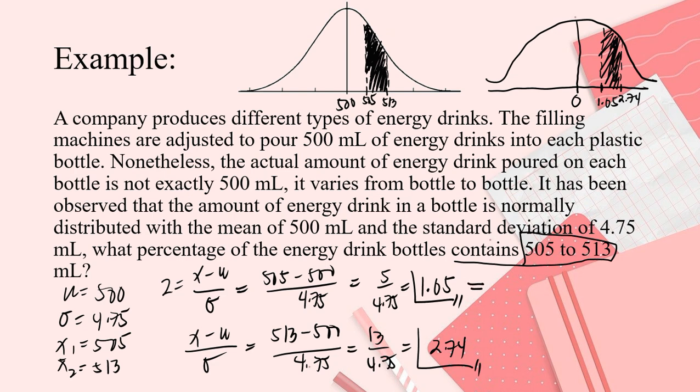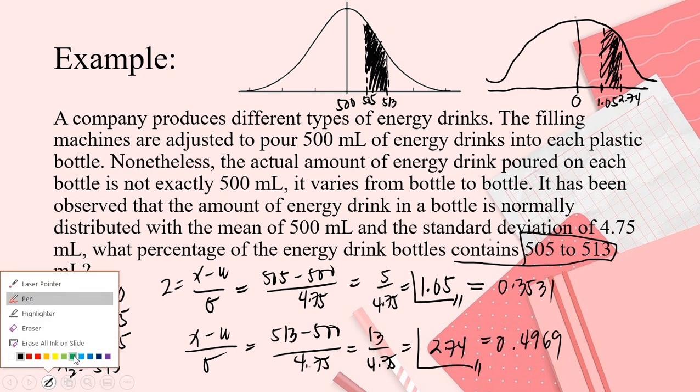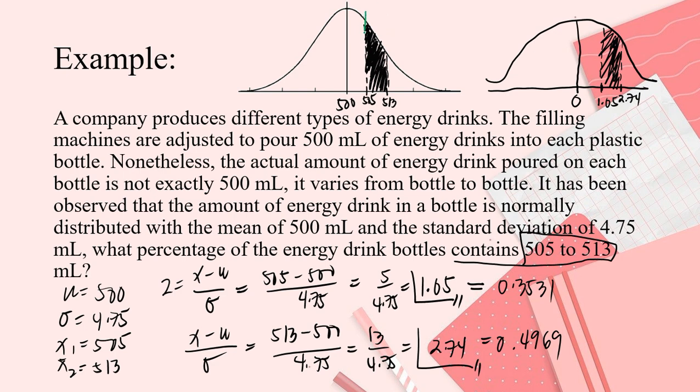What's being asked is contains these two. From 1.05 to 2.74. So, get the equivalent in our table. 1.05 has an equivalent in the table of 0.3531. And then, 2.74, equivalent in the table is 0.4969. Check in our table. So, that means, look carefully. Let's use green color. From 505 to the mean, how much? How much? 0.3531. This is just it.